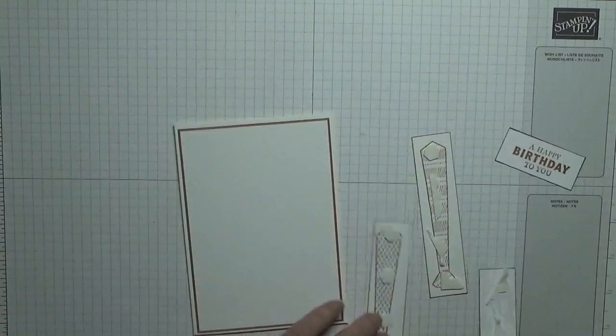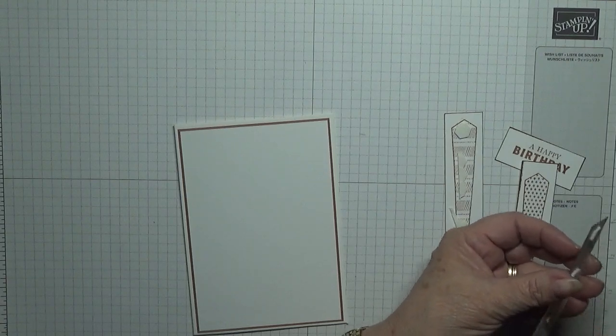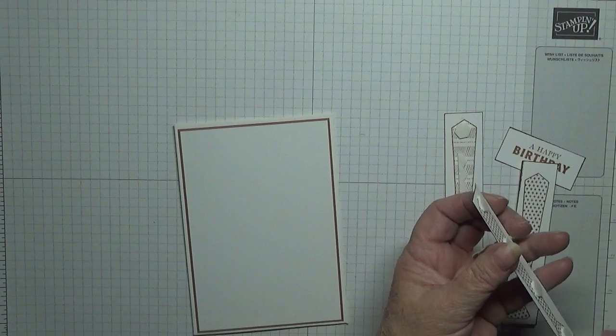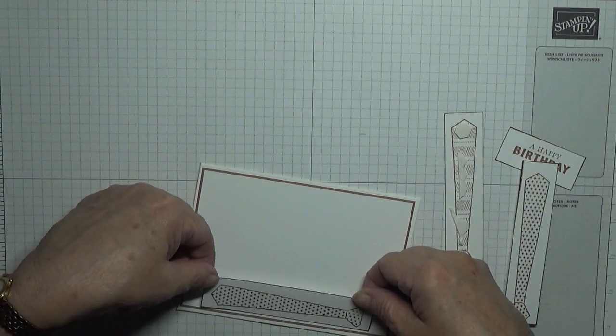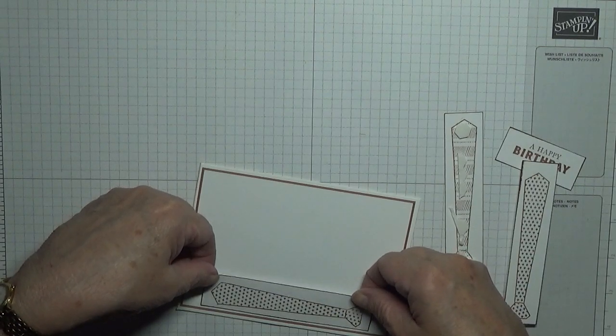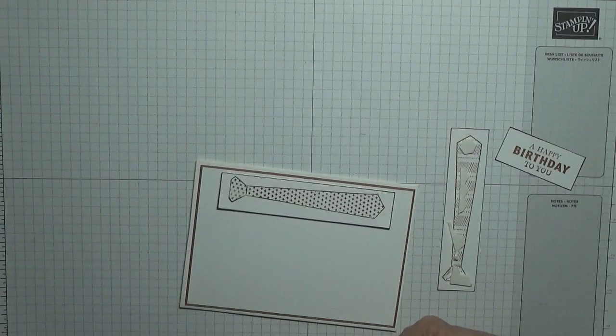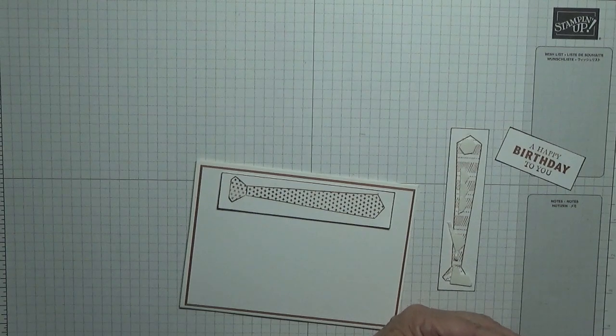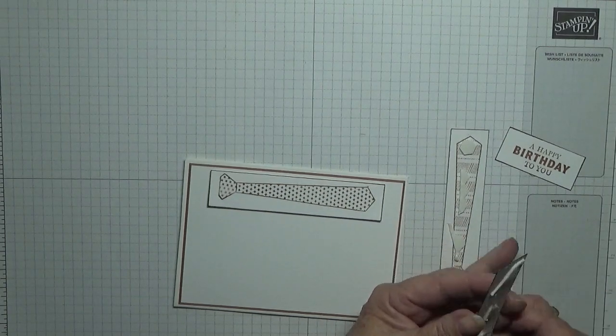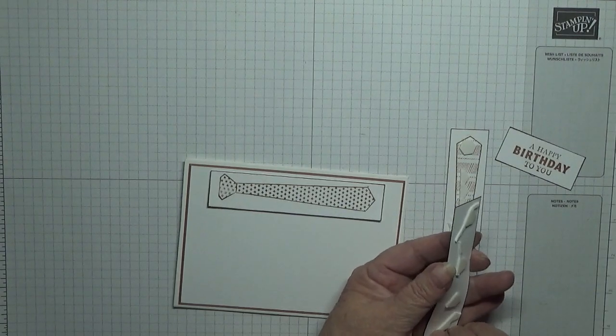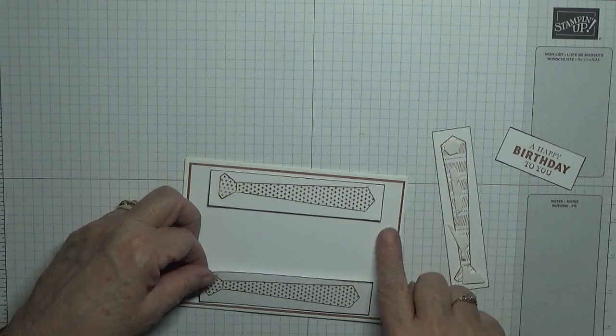So we're going to put the ends on first. So bring our card back in. Now we're going to put the ends on first. So this one, you've got to leave at least half an inch top and bottom, and a quarter inch on the edge. And again, half an inch, making it even.